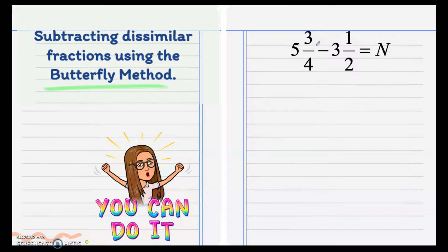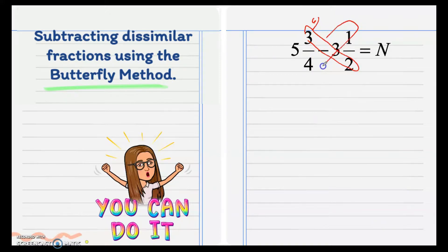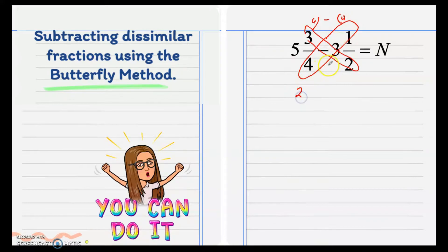Since these fractions are dissimilar fractions, we cross multiply. Here we multiply 3 and 2: 3 times 2 is 6, and we put it here. Then we also multiply 1 and 4, and our answer here is 4. Disregard the whole number first when doing the butterfly method — we will subtract the whole number at the latter part. So we subtract the new numerators, which is 6 minus 4, that is 2. Then we multiply the denominators: 4 times 2 is 8.